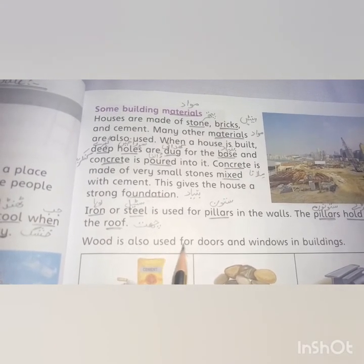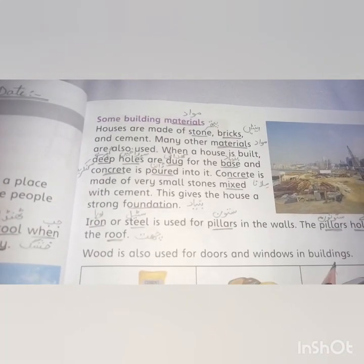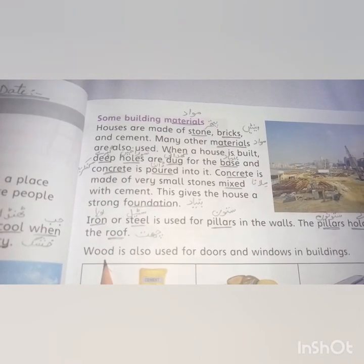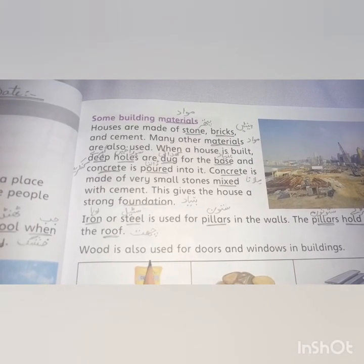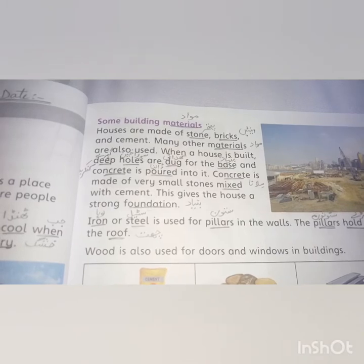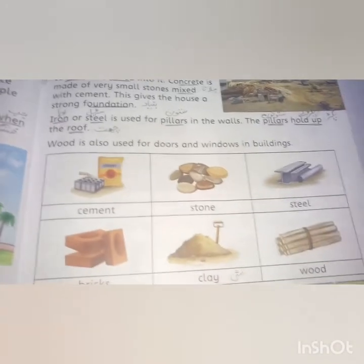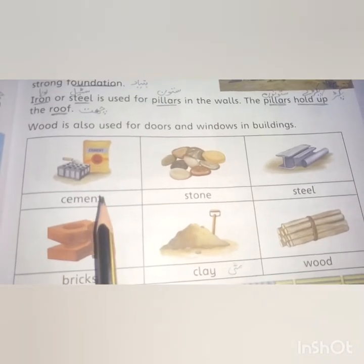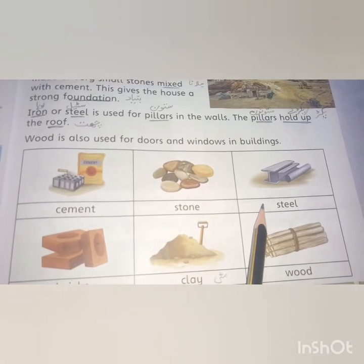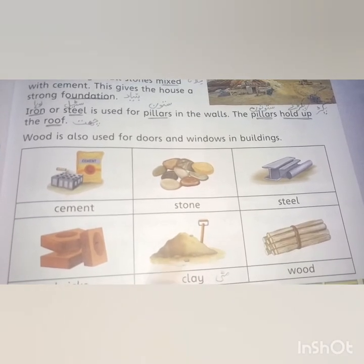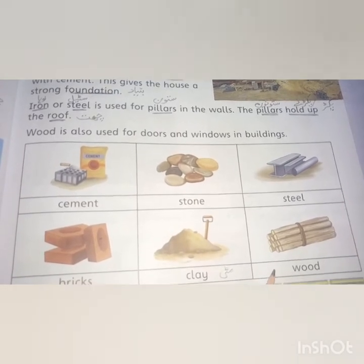Wood is also used for doors and windows in buildings. Now look here — here are the names and pictures of some materials: cement, stone, steel, bricks, clay, and wood.